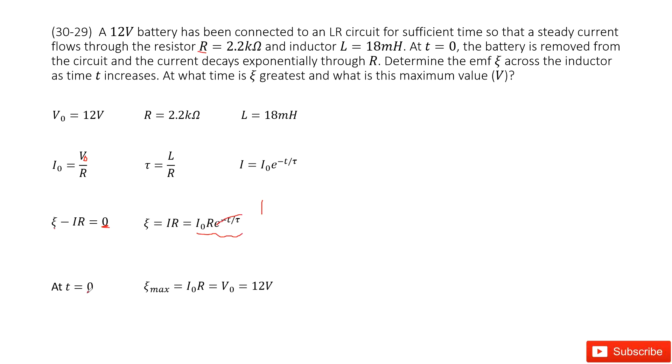So at t equals zero initially, this maximum induced EMF equals I₀ times R, and this is V₀. And V₀ is just 12V. Thank you.